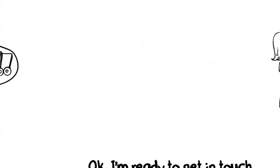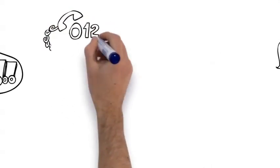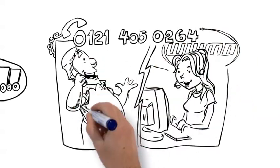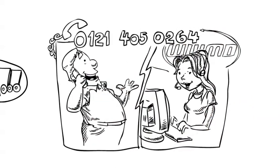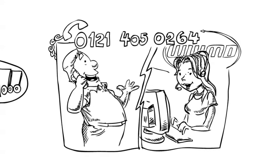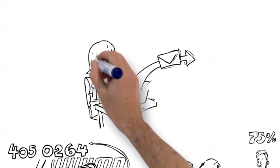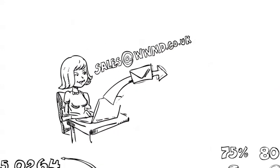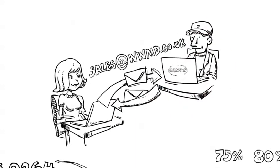The set-up process is simple. Just call 0121 405 0264 and speak to a member of our customer service team who will arrange to send you a copy of our welcome pack and discuss the details of your requirements. Alternatively, you can email us at sales at www.md.co.uk and one of our representatives will respond promptly.